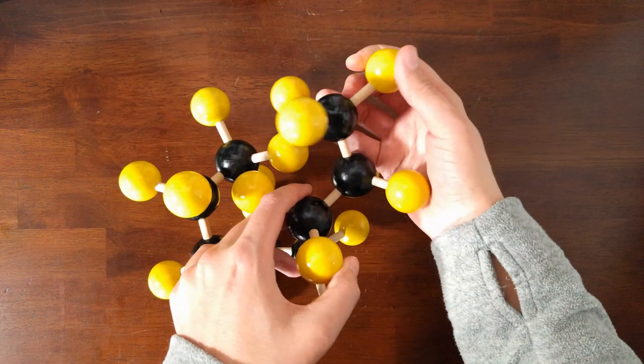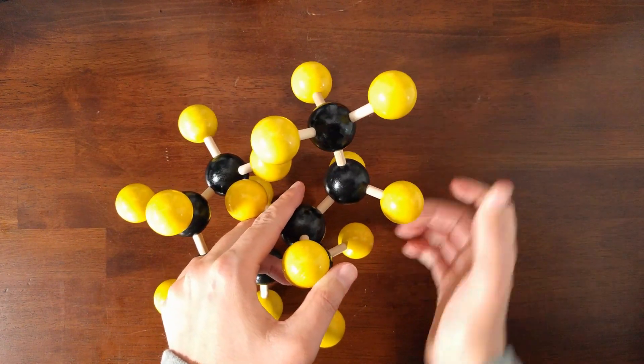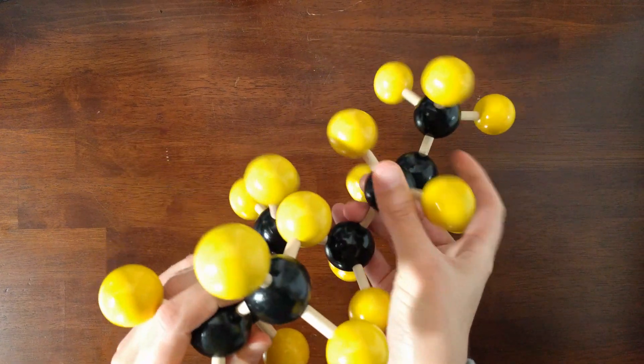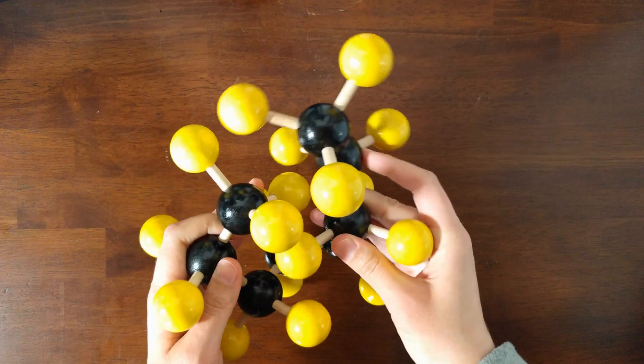Each and every one of these carbon-carbon bonds can rotate millions of times a second at room temperature. That means this molecule is just constantly changing shape. These shapes are called conformations.